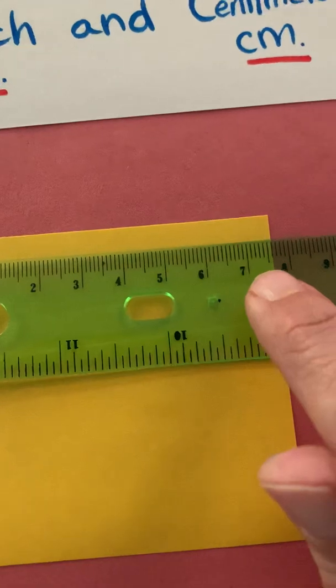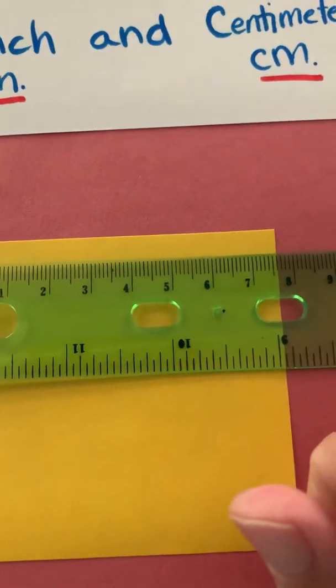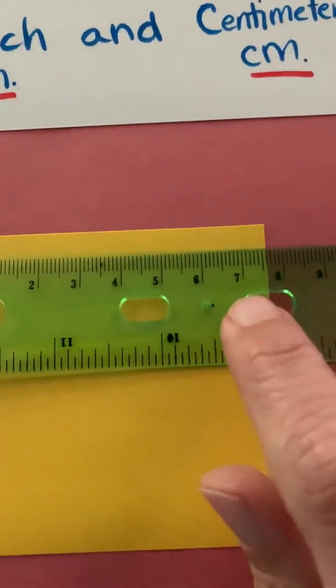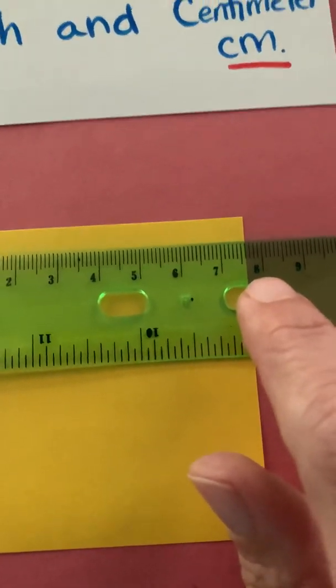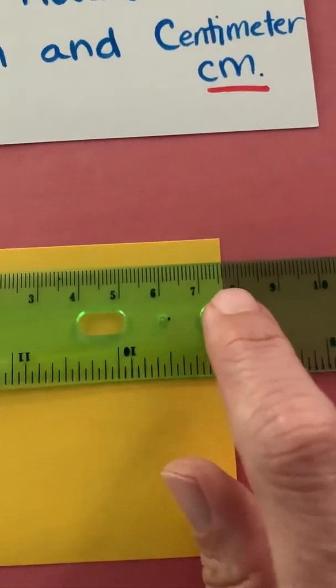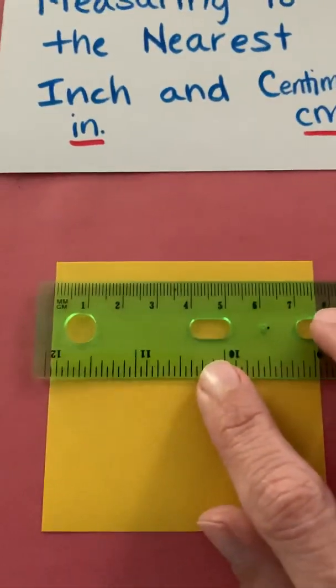So that halfway mark is kind of the midpoint. We're not measuring to 7.5 centimeters or 7.6. We're going to say that it's closer to 8. Remember we're measuring to the nearest centimeter and so we'd say it's 8 because it's past that halfway mark. So we'd say that's 8 centimeters.